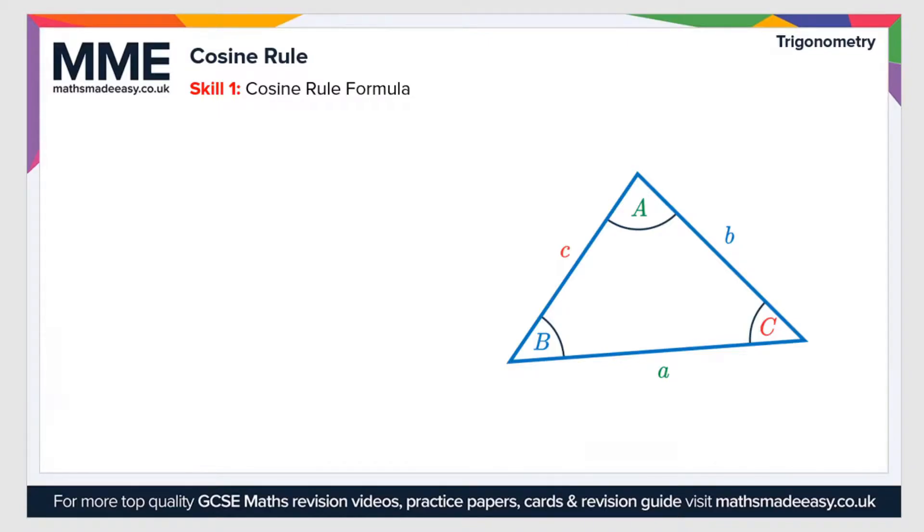But the cosine rule is a formula that you can use to find a missing side length or a missing angle in any triangle, so it doesn't have to be a right angle triangle.